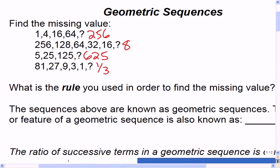625. Good. And? 1.333. So how do you do it? Those of you who are doing it so quickly, how did you figure out what the missing value was for all those? Find the pattern.